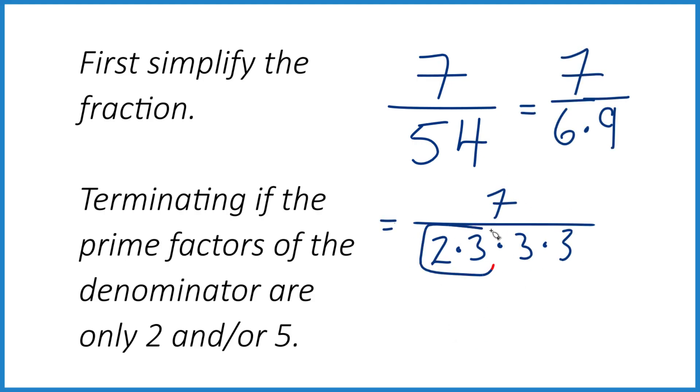So 2 times 3, that's 6. 3 times 3, that's 9. So we do have a 2, but we have these 3s here. So if we have a 3, remember we can only have 2 or 5 as our prime factors. So this has to be a repeating fraction, even though we have an even number.